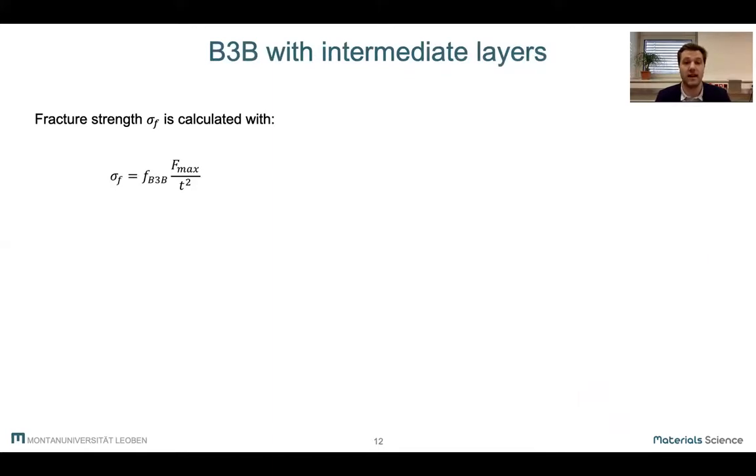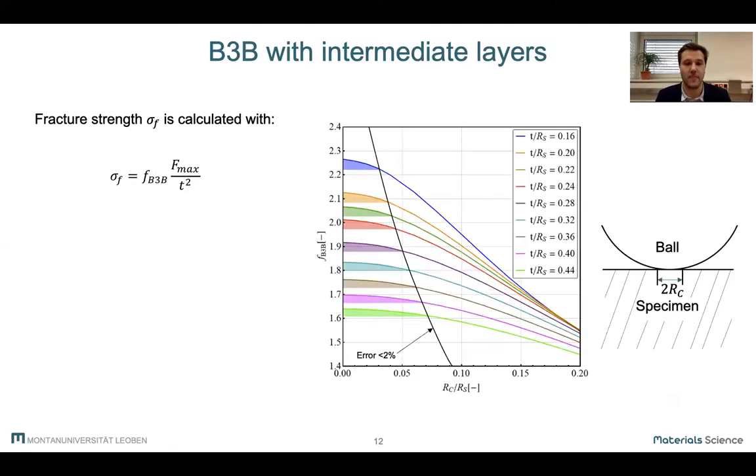In order to explain the high strength of ball-on-three-balls samples with layers, we have to look at how fracture strength is calculated. We can see that the factor f over here plays an important role as most geometric variations apart from the thickness t are included in it. Now if we look at the factor f in dependence of the contact radius, we can see that if the contact radius increases, the factor f decreases. According to the formula, if specimens always fail at a similar fracture stress, then the failure load has to increase to compensate for a decrease.